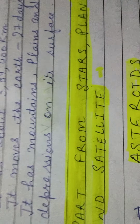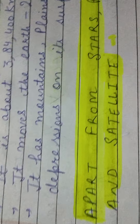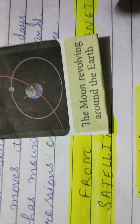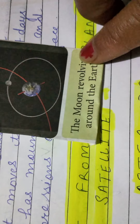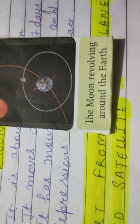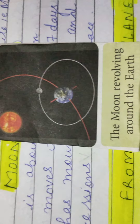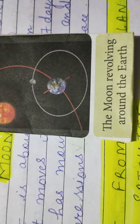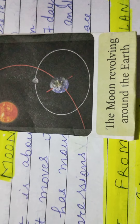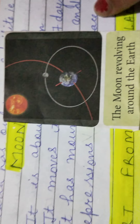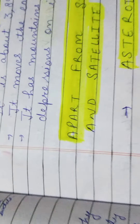This is a picture of the Moon — the Moon revolving around the earth. This is our satellite, the Moon. It revolves around the earth in 27 days.